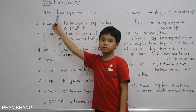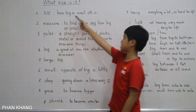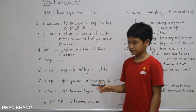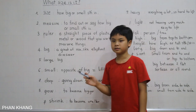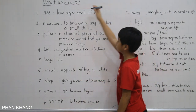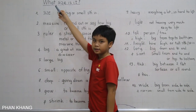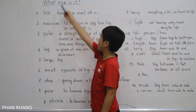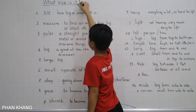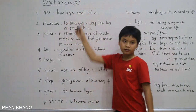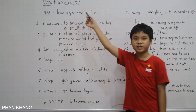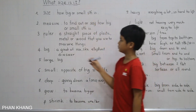First is size. Size is how big or how small something is. To make a question, we start with 'what,' followed by 'size,' then 'is,' followed by a noun — for example, 'What size is this?' But we can change 'this is' into another noun.